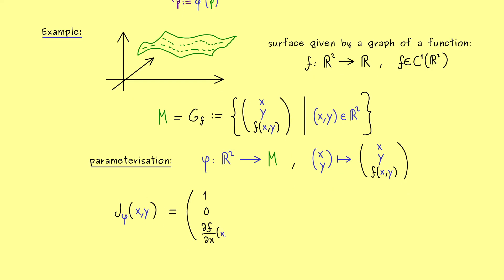Please don't forget, this is evaluated at the point (x,y). The next column would be the partial derivative with respect to y: 0, 1, and the partial derivative of f with respect to y. So this is the Jacobian matrix. Now we know these two columns span the tangent space.